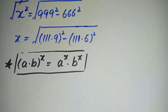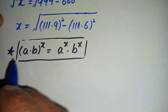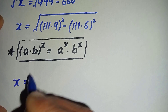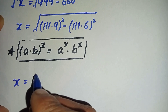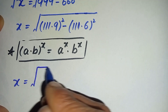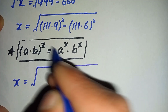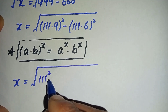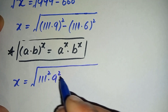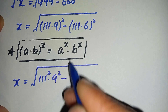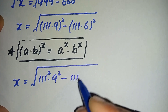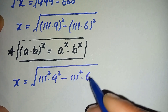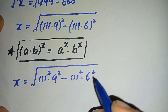By using this exponent math property on the right hand side of this equation, the equation will become: x is equal to the square root of 111 squared times 9 squared, minus 111 squared times 6 squared.